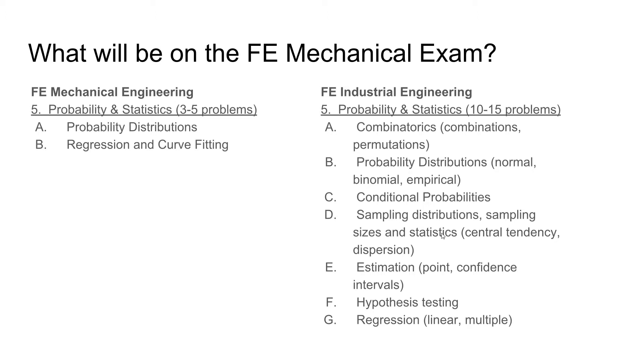On the other hand, the FE Industrial Engineering exam has 10 to 15 problems and has many more topics like combinations, permutations, equations, explicitly calls out normal, binomial, empirical distribution tables, conditional probabilities, more with sampling and estimation, and also specifically calls out linear regression and multiple regression analysis.